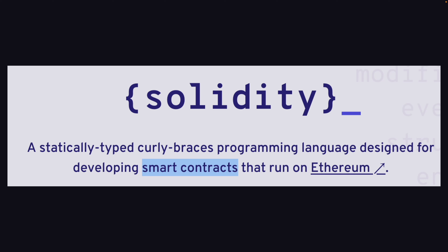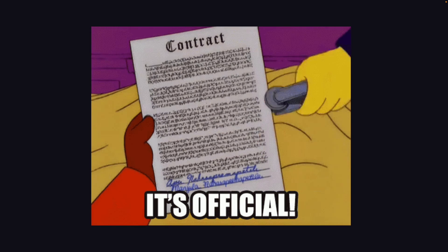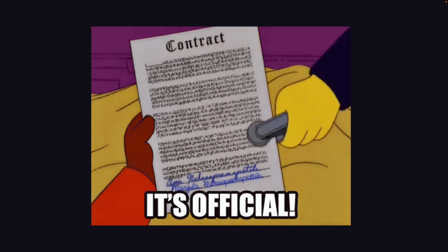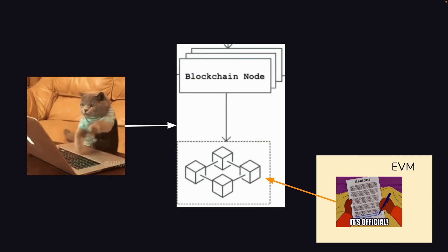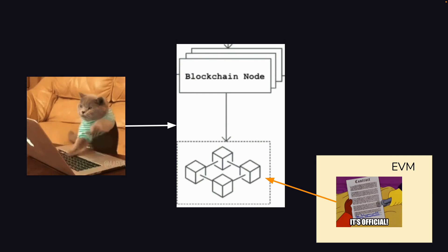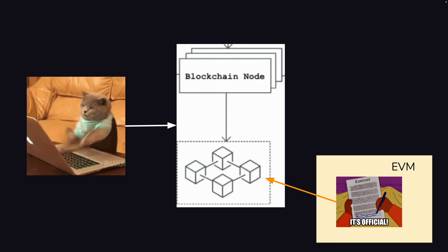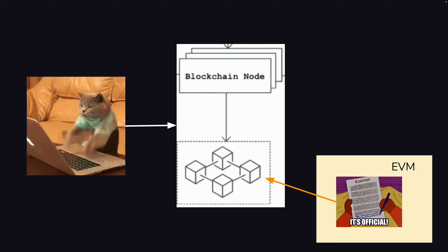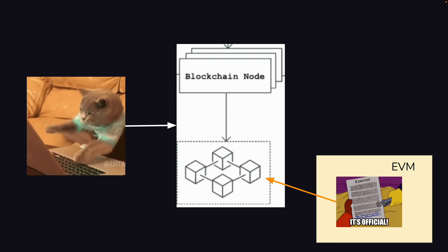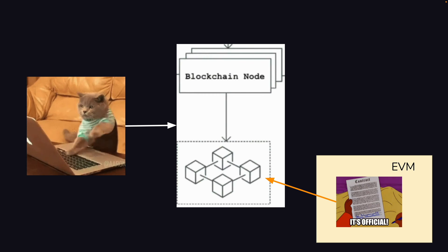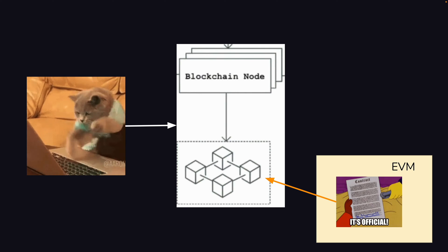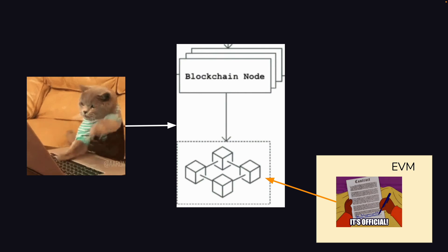Solidity is a programming language designed to develop smart contracts that run on the Ethereum network. A smart contract is a digital agreement that cannot be changed. When customers interact with the blockchain network, each of the individual blockchain nodes are Ethereum Virtual Machines, which run a smart contract.